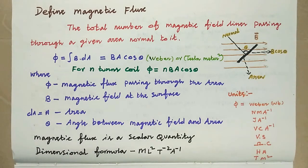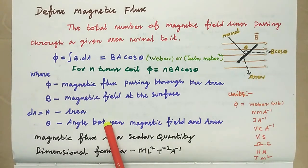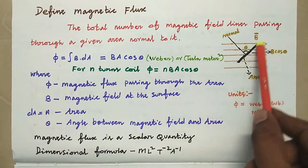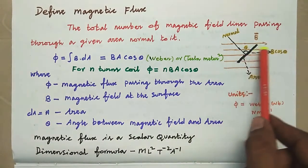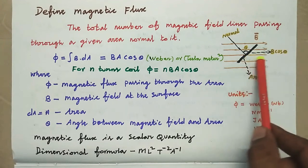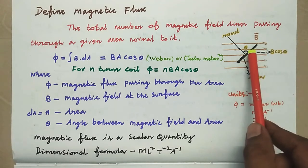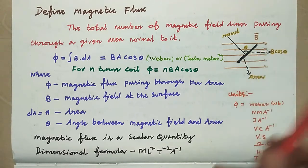Define magnetic flux. The total number of magnetic field lines passing through a given area normal to it. In the area we cross the magnetic field lines — this is the concept of magnetic flux.